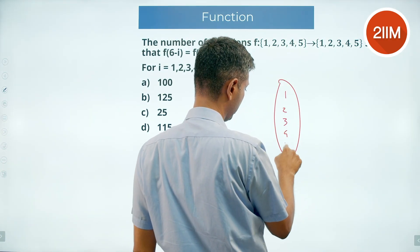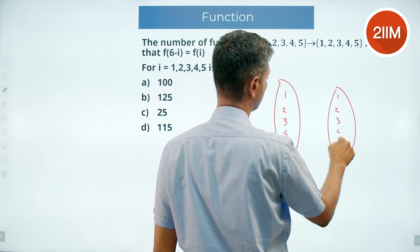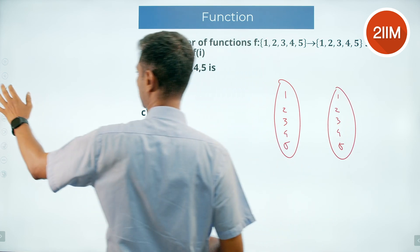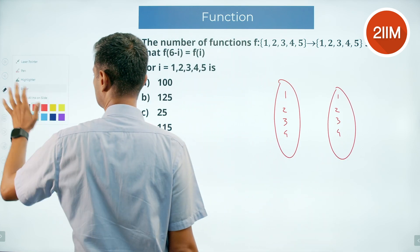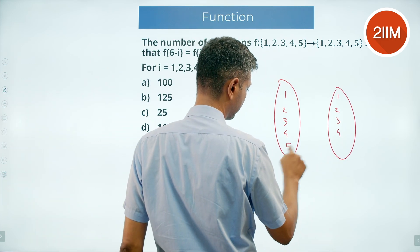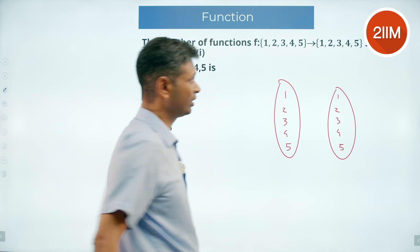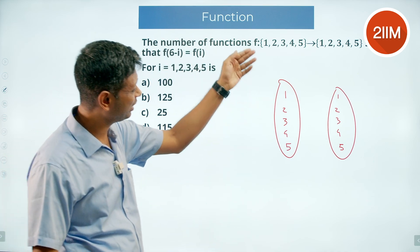2, 3, 4, 5 going to 1, 2, 3, 4, 5. My fives are nightmarish, they look like some Greek symbol. It's a function, so every element here should be